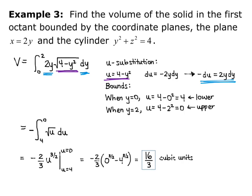And so when you're changing your bounds, you always want your lower y bound to translate to your lower u bound. So when y equals 0, u equals 4, so that becomes the lower u bound. When y equals 2, u equals 0, so that becomes the upper u bound.